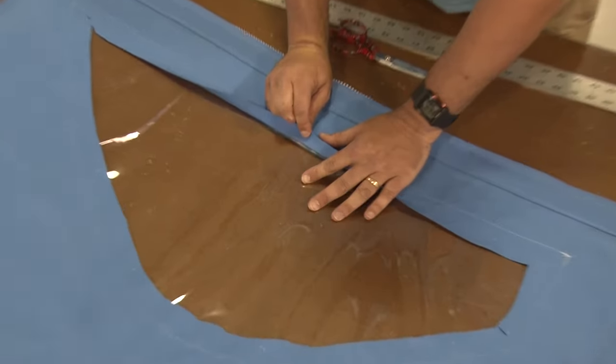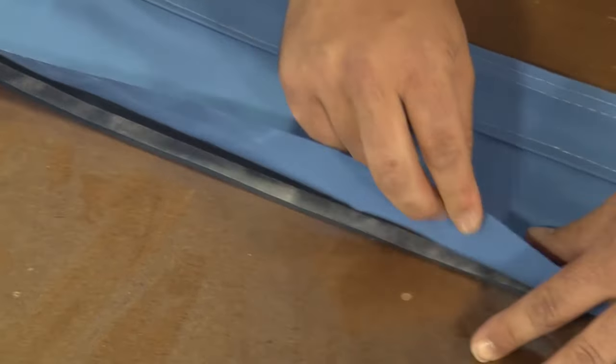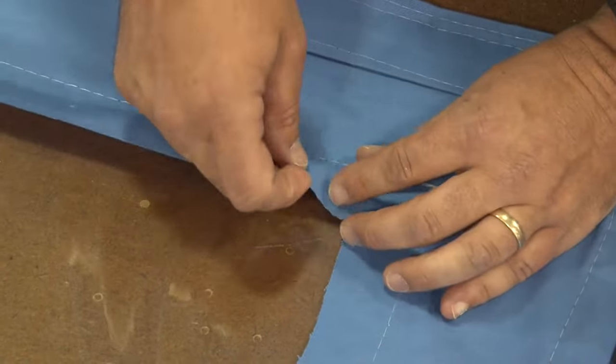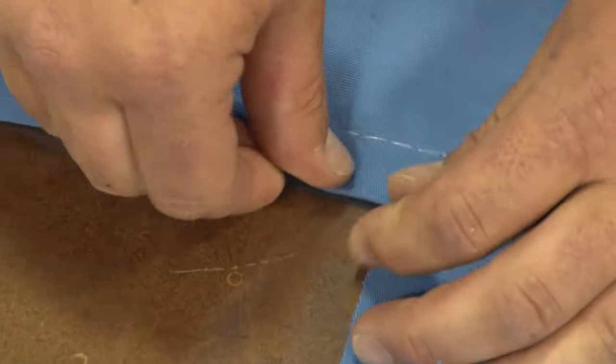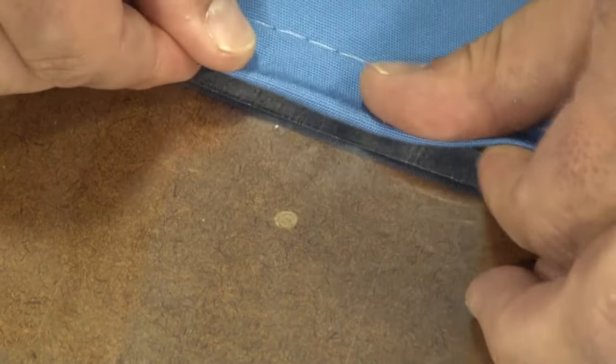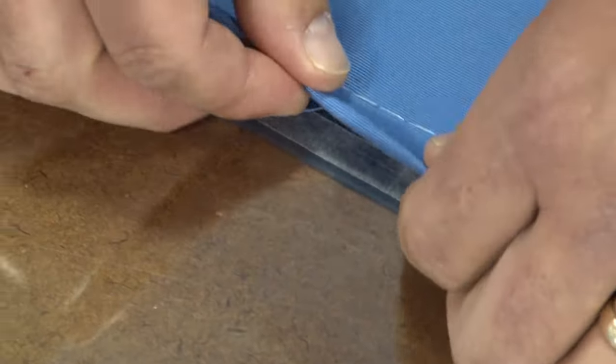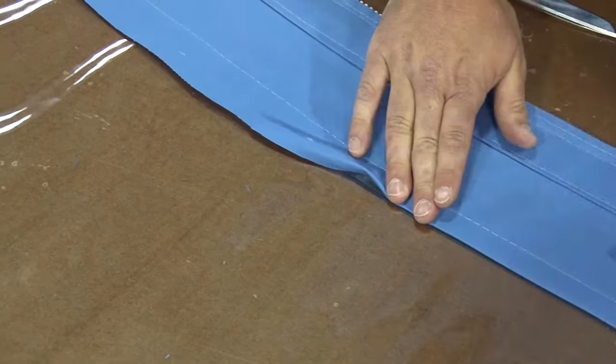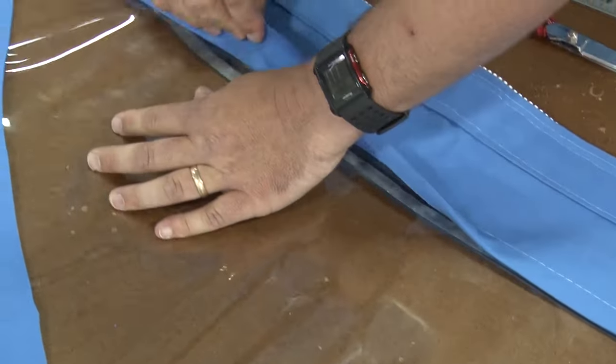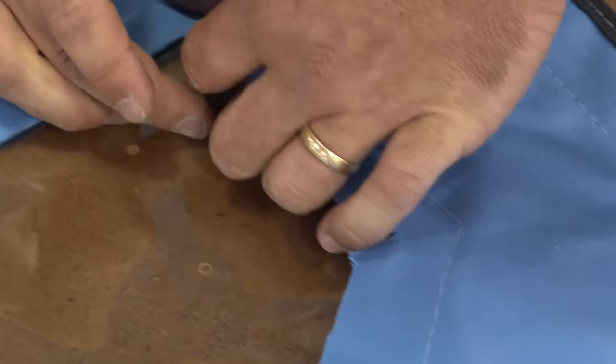You'll notice now that Brian is peeling the Sunbrella canvas away from the vinyl window material, or I should say away from the double sided tape that he based it on earlier. He creates a single hem so the fold is directly in line with the binding on the opposite side of the window. Take your time here. It's better to have an accurate fold than one that is fairly sloppy. You can see now the major advantage of placing that double sided tape on the vinyl window material here, because it definitely helps to hold that hem in place.